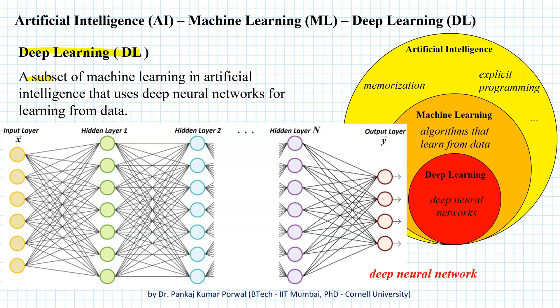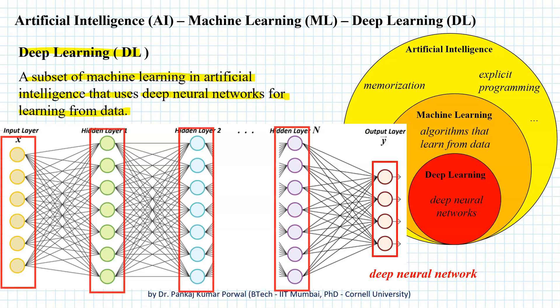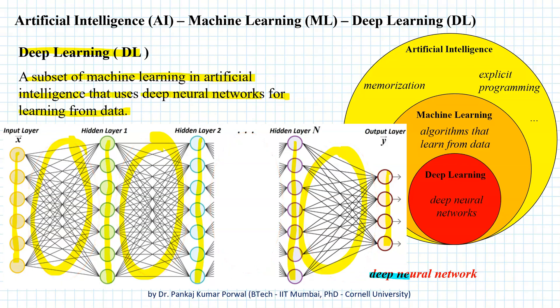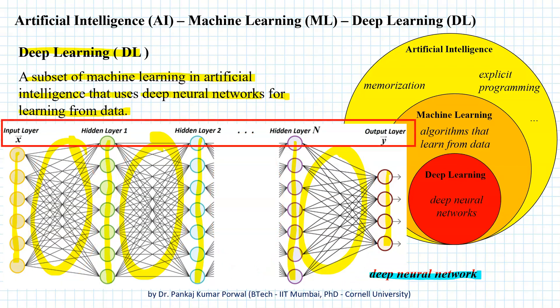Deep learning is a subset of machine learning in the field of artificial intelligence that uses a particular type of algorithm — deep neural networks — for learning from data. A neural network is a graph consisting of nodes and connections, and a deep neural network is one that has a large number of layers.